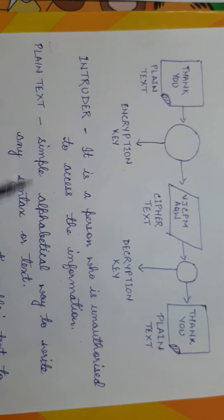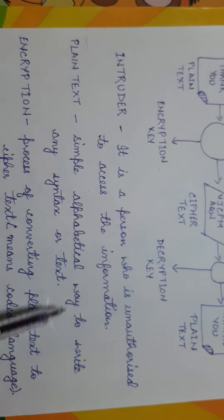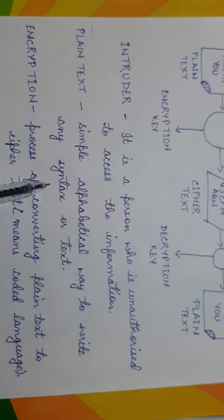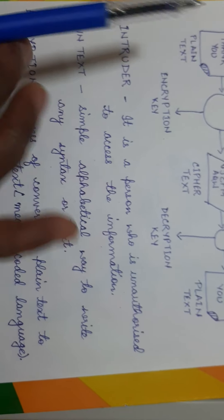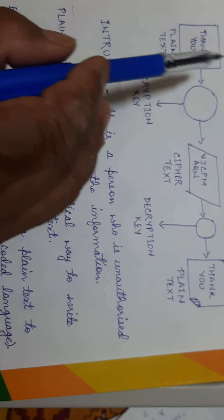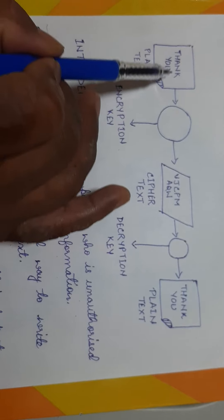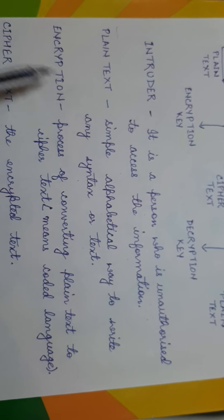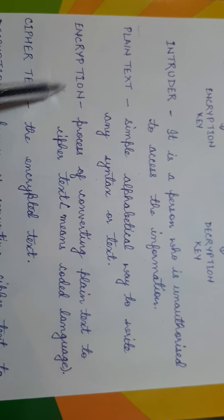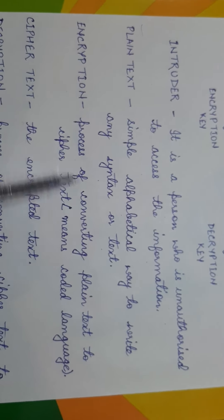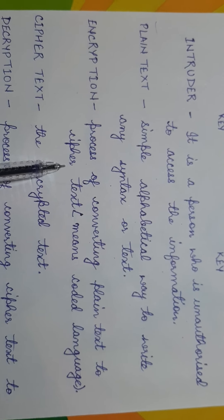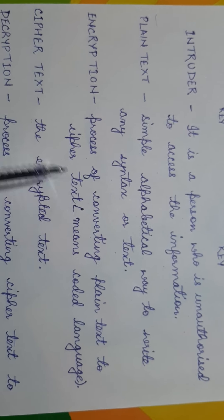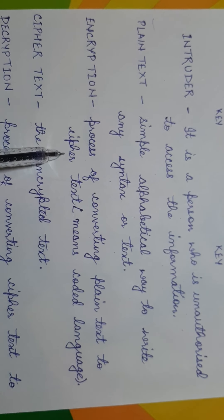An intruder is a person who is unauthorized to access the information. Plain text is a simple alphabetical way to write any syntax or text — you can write any text, such as 'thank you,' 'I like you,' any pattern, any secret — you can use any text.